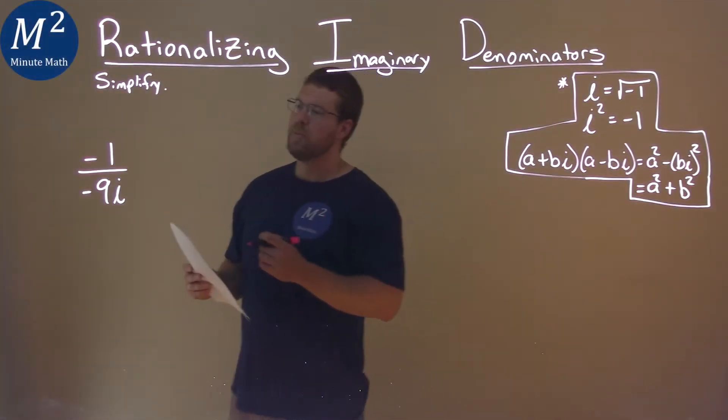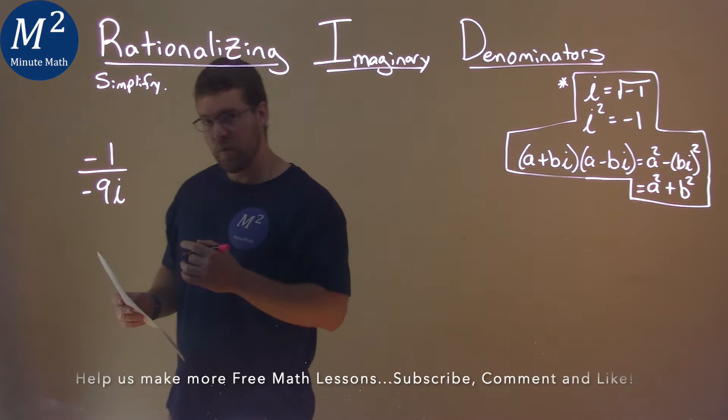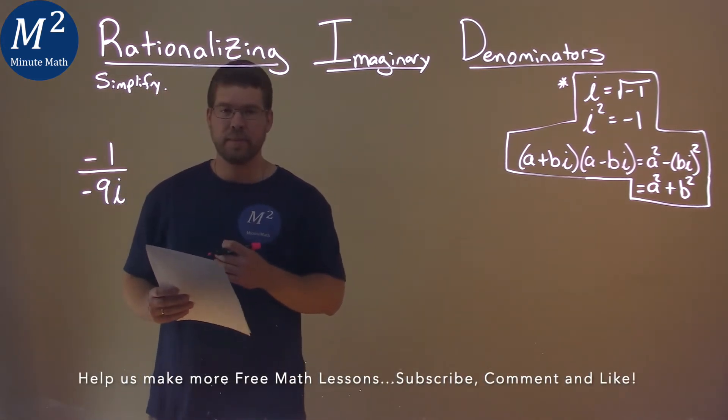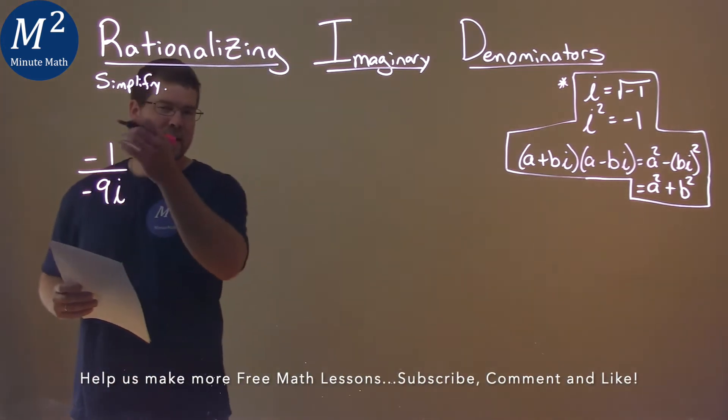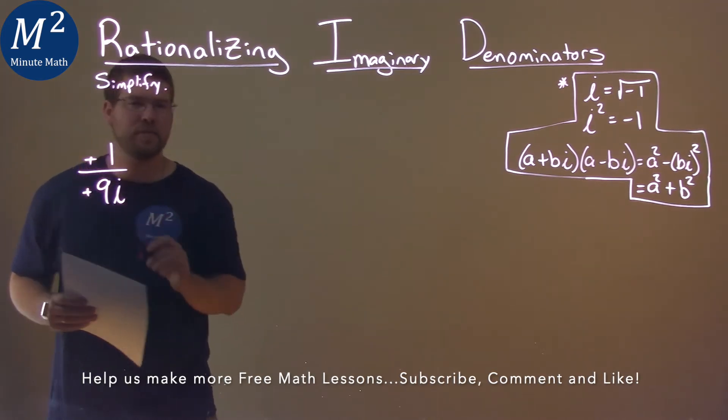We're given this problem right here: negative 1 over negative 9i, and we gotta simplify. First thing I see, negative over negative, let's make these positives.